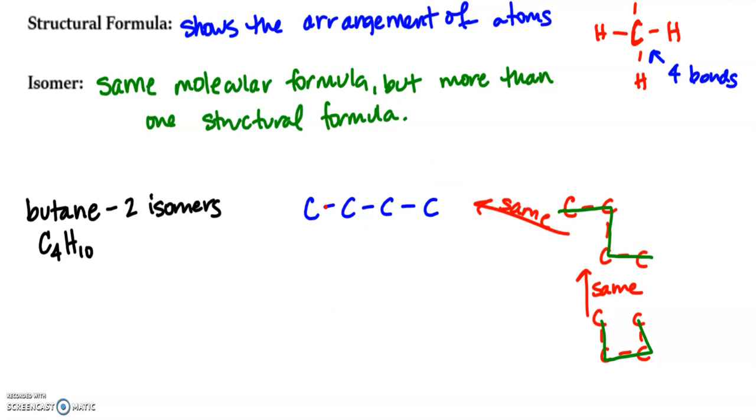What is another isomer or another structure of this one? Here's the key. Here's what you want to do. You want to shorten the longest chain of carbons by one and add branches.